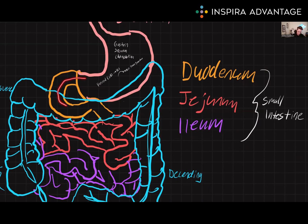After passing through the duodenum, the food will then move into the jejunum, shown here in red. The jejunum is the middle section of the small intestine, and it's about 2.5 meters long. It is responsible for the majority of nutrient absorption. The walls of the jejunum are lined with villi and microvilli, which increases surface area for absorption. The jejunum also receives secretions from the pancreas and liver, which aid in digestion.